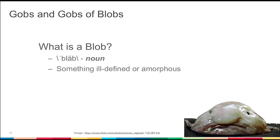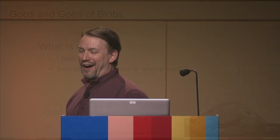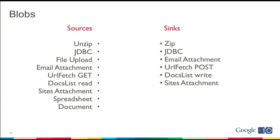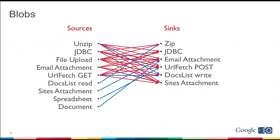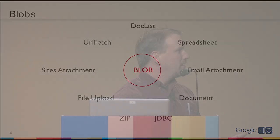Now, a little tangent: let's talk about blobs. First, what's a blob? It's something ill-defined or amorphous. Some people may have the notion of a binary large object from a database — please cast that from your mind. We have a bunch of different sources and sinks of data within Google Apps Script: unzipping something and putting it into your doc list, querying JDBC and posting to a website, file uploads, email attachments. You get this Cartesian product of different ways to interact with things, and very quickly this gets out of hand. Hence the blob. Any time you're dealing with some data that's got a name, a type, and some measure of content to it, this allows us to treat all these things the same way, regardless of where they come from and where they're going.